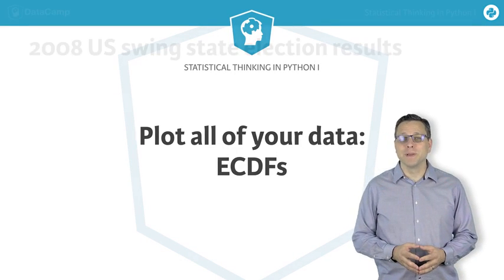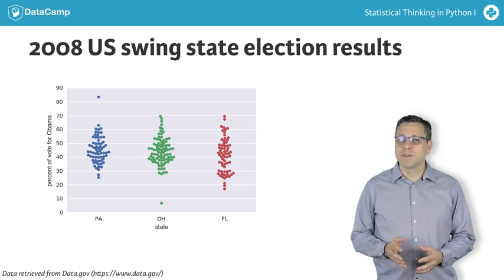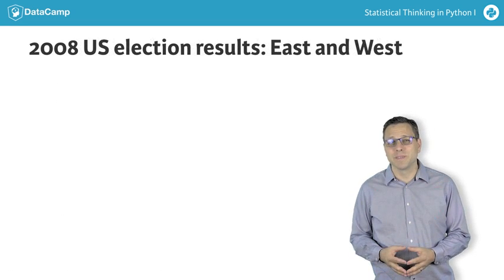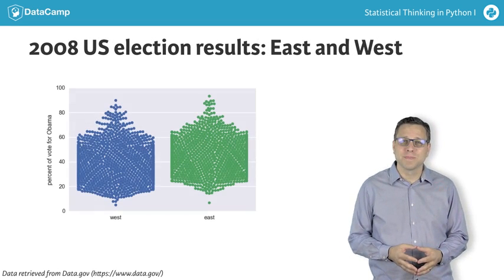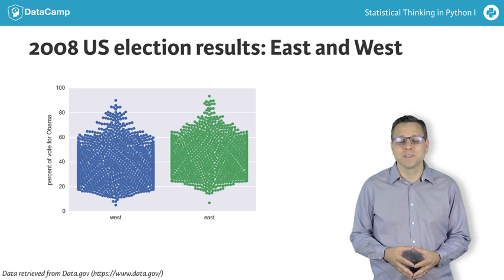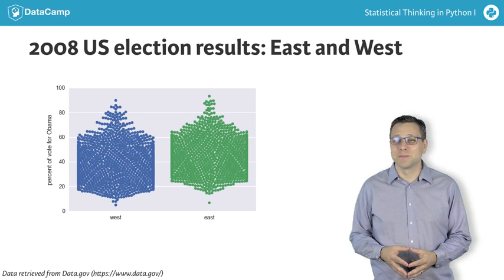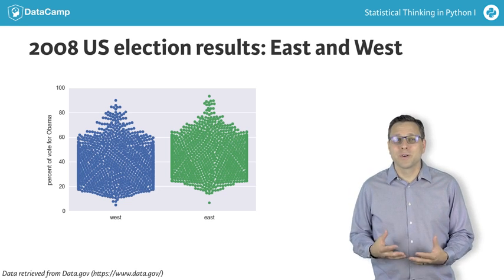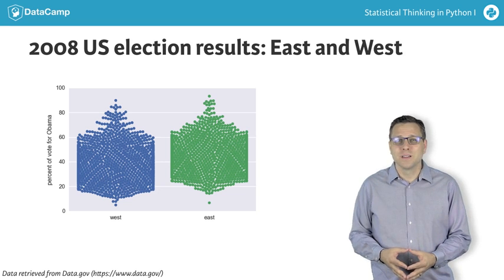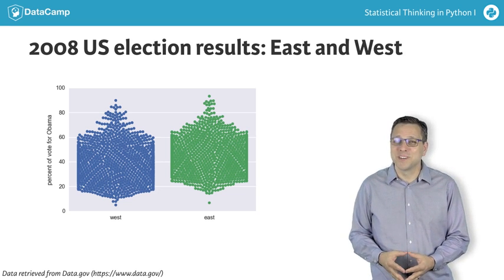We saw in the last video the clarity of bee swarm plots. However, there is a limit to their efficacy. For example, imagine we wanted to plot the county-level voting data for all states east of the Mississippi River and all states west. We make the same swarm plot as before, but using a data frame that contains all states, with each being classified as east or west of the Mississippi. The bee swarm plot has a real problem: the edges have overlapping data points, which was necessary in order to fit all of the points onto the plot. We are now obfuscating data. So, using a bee swarm plot is not the best option here.